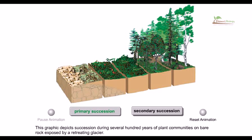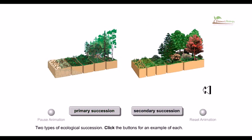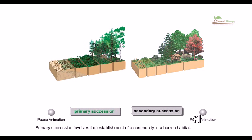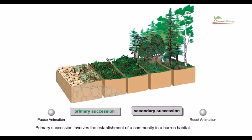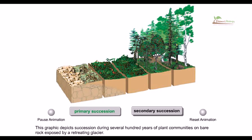In primary succession, what happens is the establishment of a community in a barren habitat. This graphic depicts succession during several hundred years of plant communities on bare rock exposed by a retreating glacier.